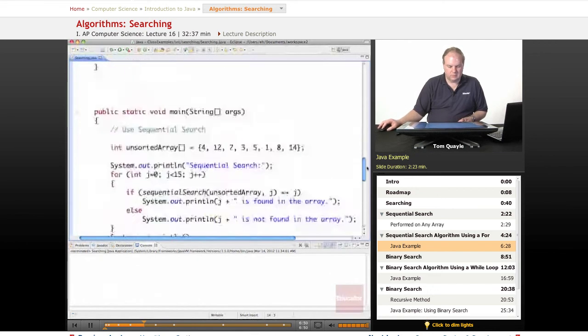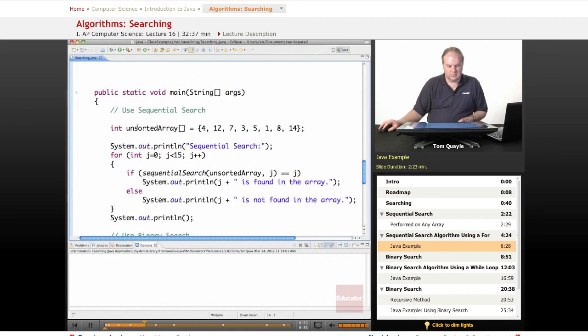I have my main method down here that is going to call the sequential search method. I have an array of ints called unsorted array. And as you can see, there are just some integers in random order. It's not sorted. And so I'm going to have a for loop here going from 0 to less than 15. And for each iteration of the for loop, I'm going to call sequential search with the same unsorted array looking for whatever the value is of the loop counter.